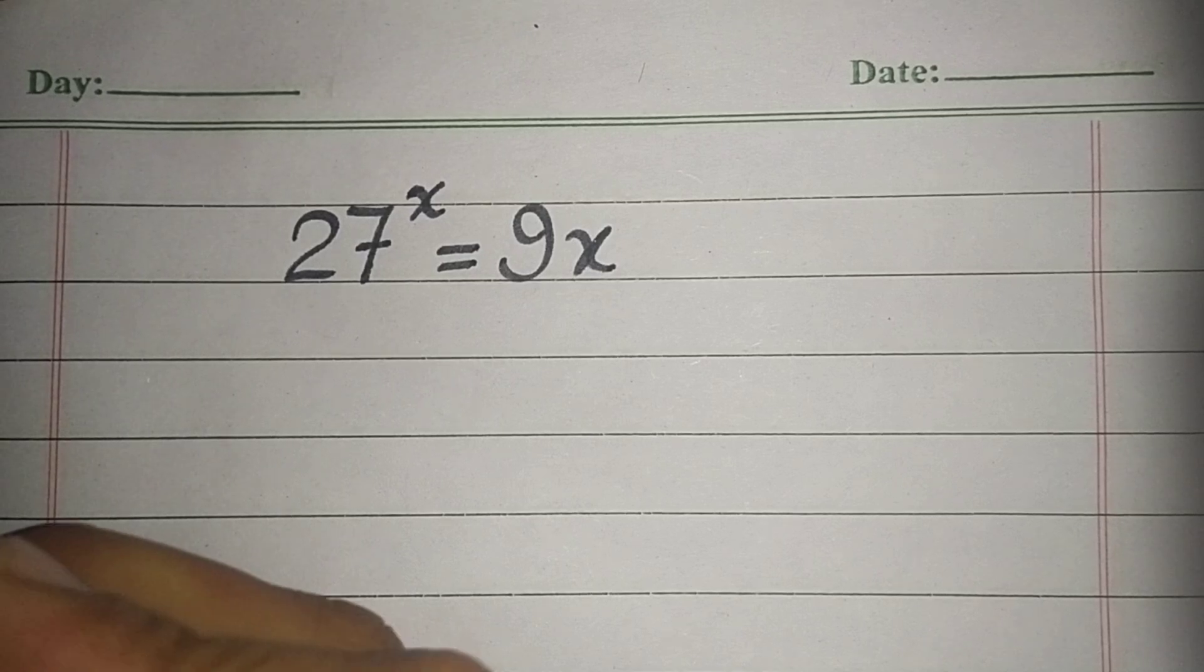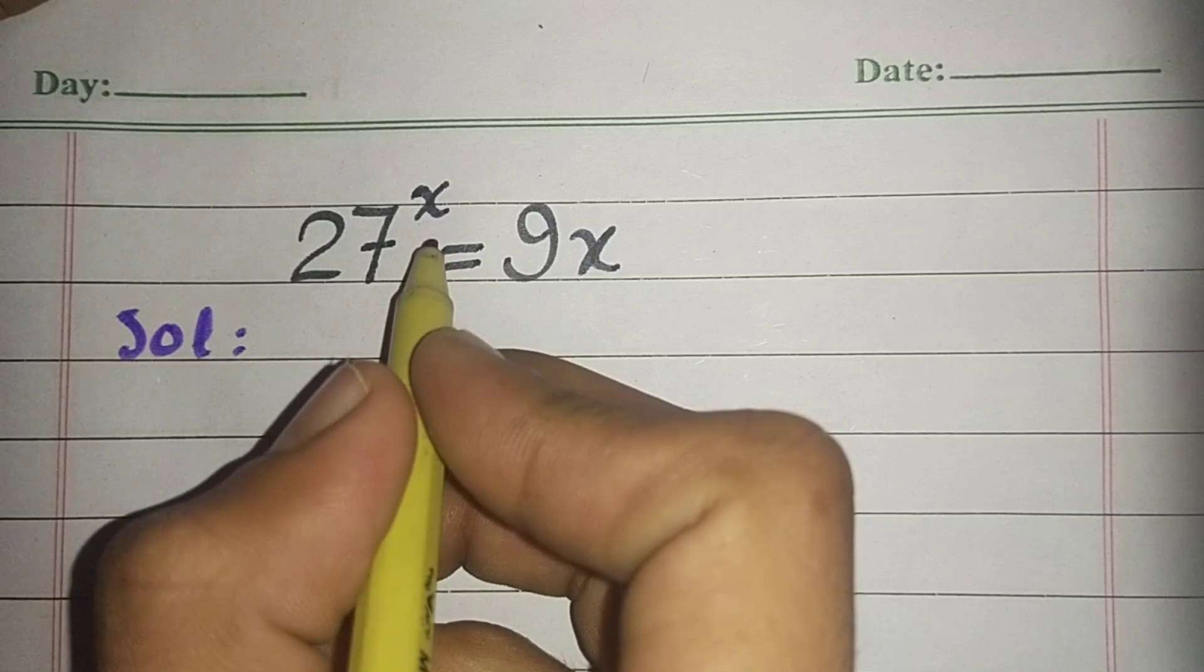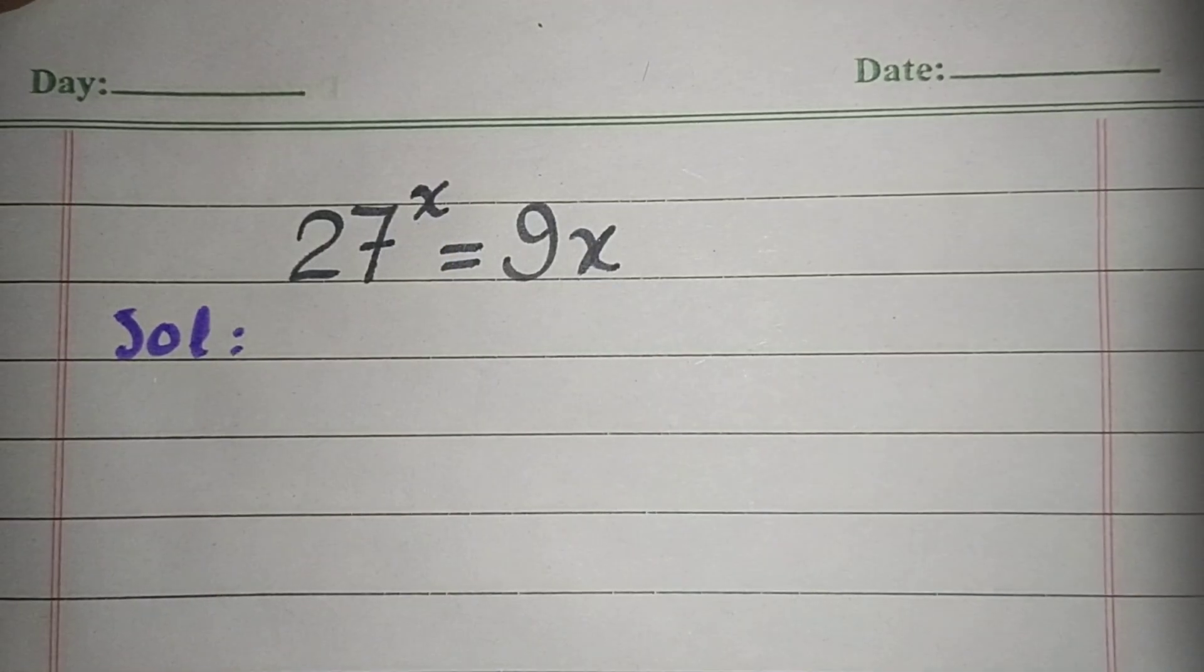In this video we are going to solve this interesting basic equation. We have 27 power x is equal to 9 times x.